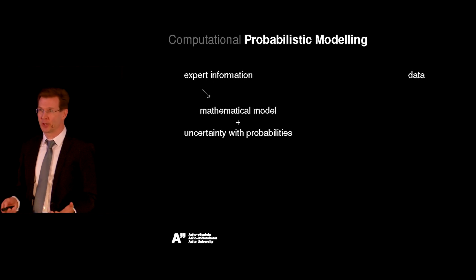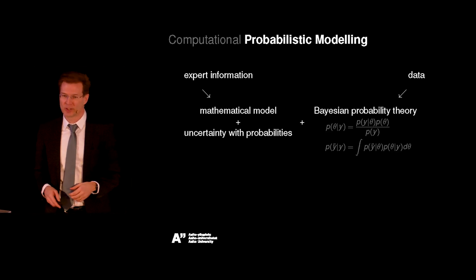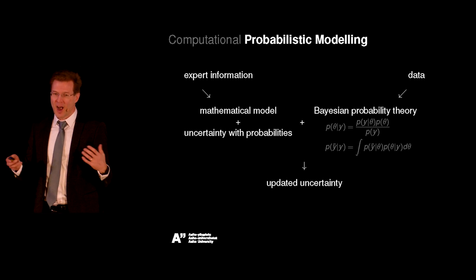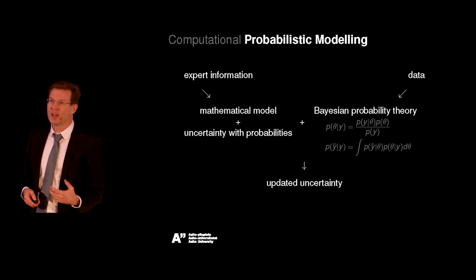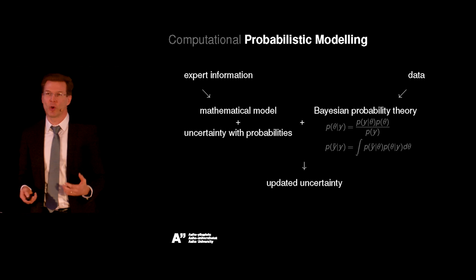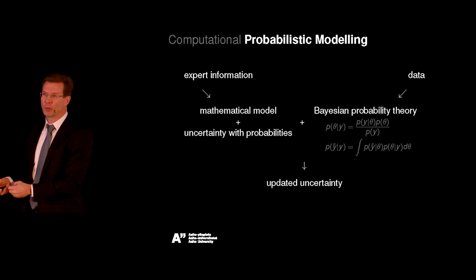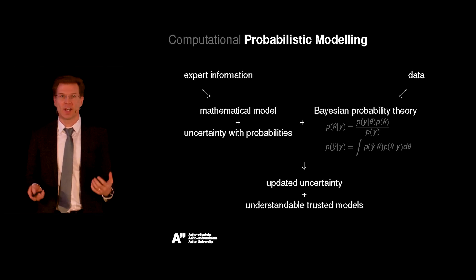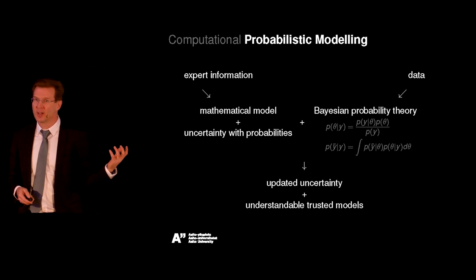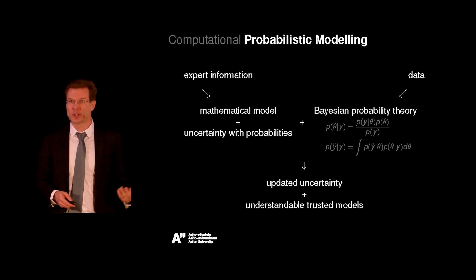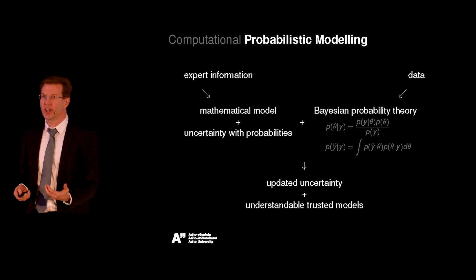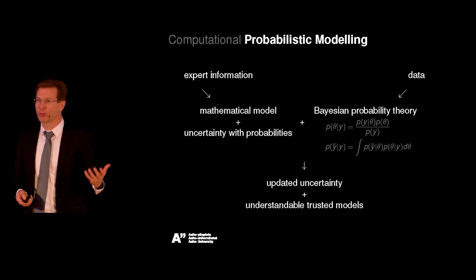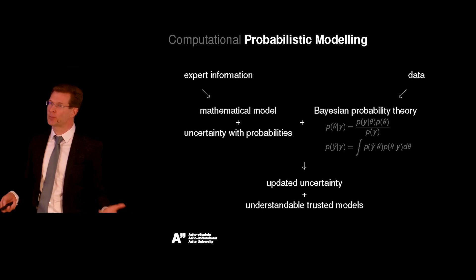Then we get data, which is numbers. We combine this mathematical model with the numbers using Bayesian probability theory — that's just the math. By combining the numbers with the mathematical model, we get updated uncertainties: we become more certain what the diffusion rates are, and more certain what the safe dosage is for a three-year-old child of a specific weight. We get understandable models because we started from expert information, which also brings trust. Having uncertainties explicitly also brings trust — for example, if we see we don't yet know the safe dosage for the smallest kids, we know we need more observations and need to be more careful.